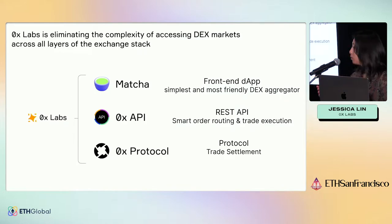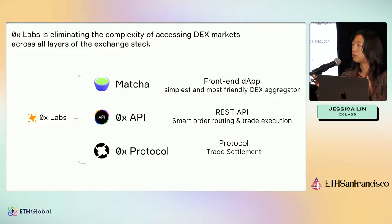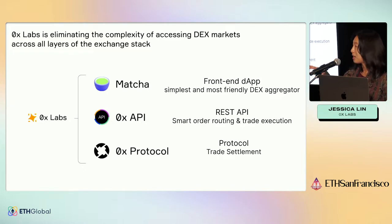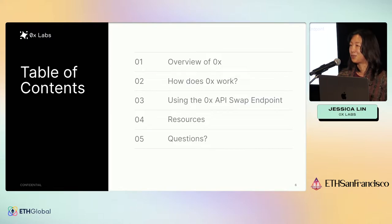At 0x Labs, we cover several layers of the stack. Starting at the very top, Matcha is our front-end user application. Behind that is the API, which powers a lot of the other projects I was mentioning. And then below that is the protocol — a set of open-source smart contracts that handle trade settlement. For the remainder of the talk, we'll overview what 0x is, dive into how it works, and then specifically talk about using the swap endpoint, which is what we're sponsoring prizes for at this hackathon, plus sharing useful resources.